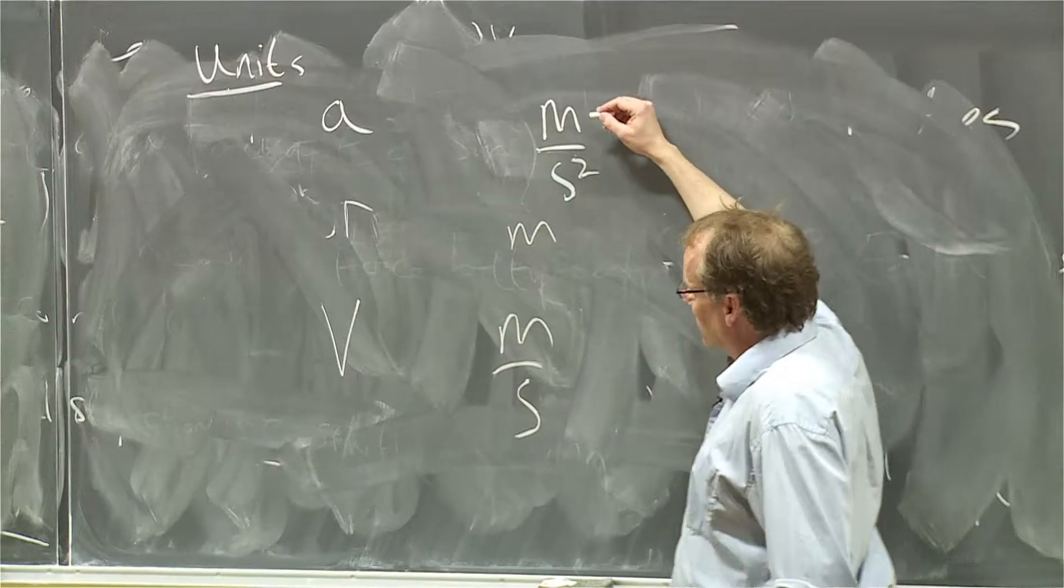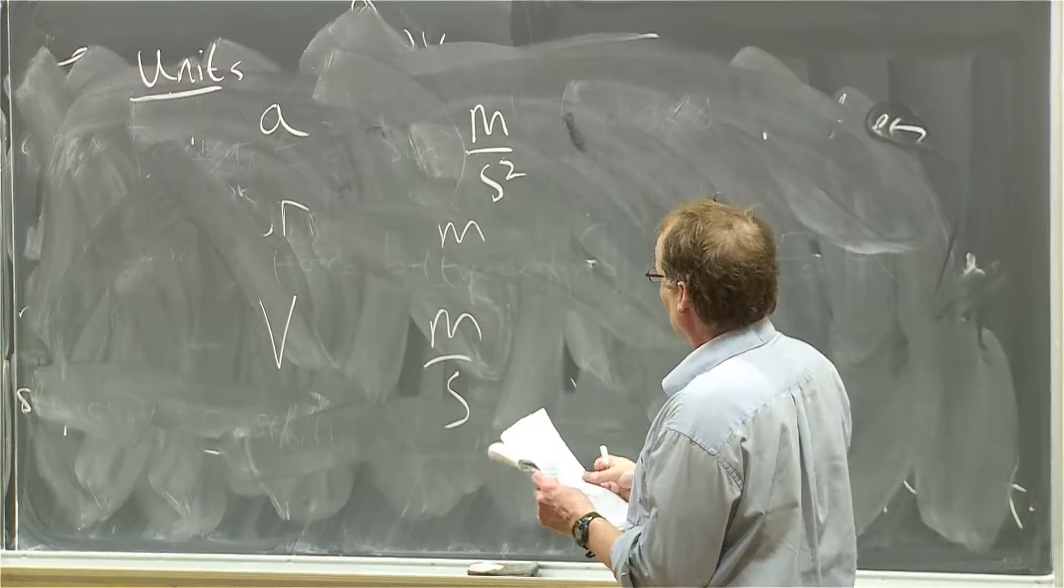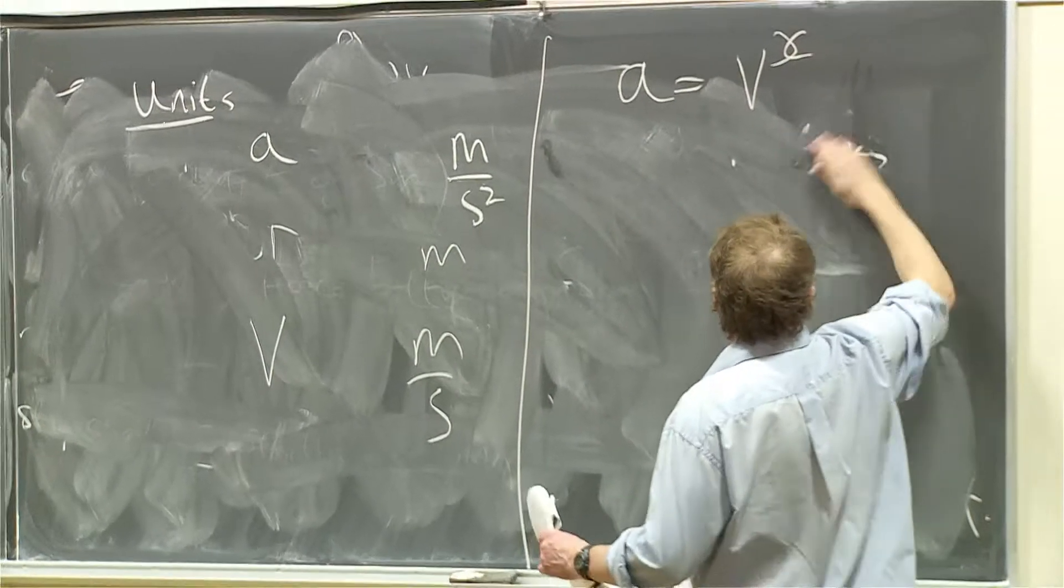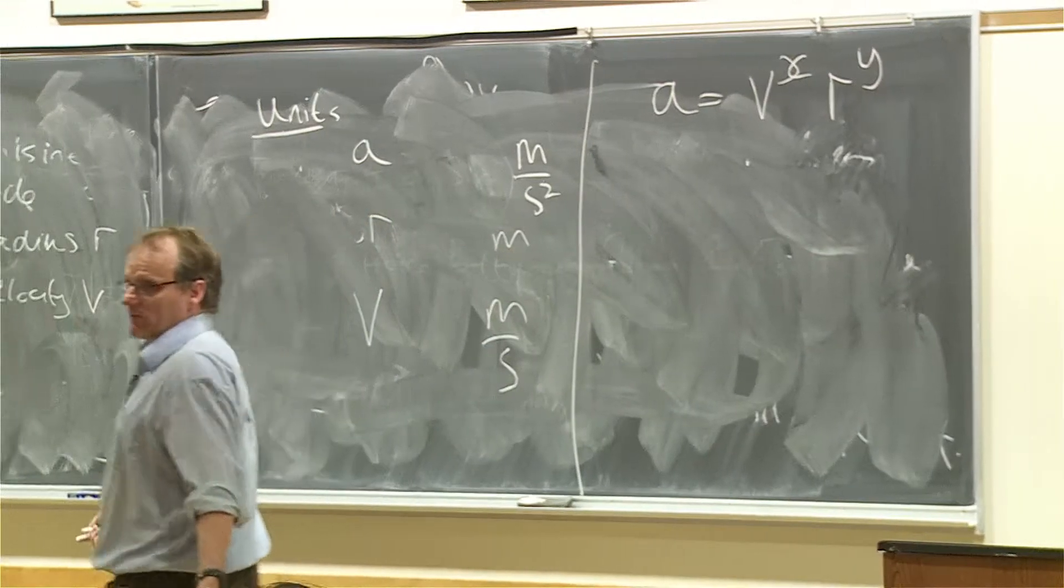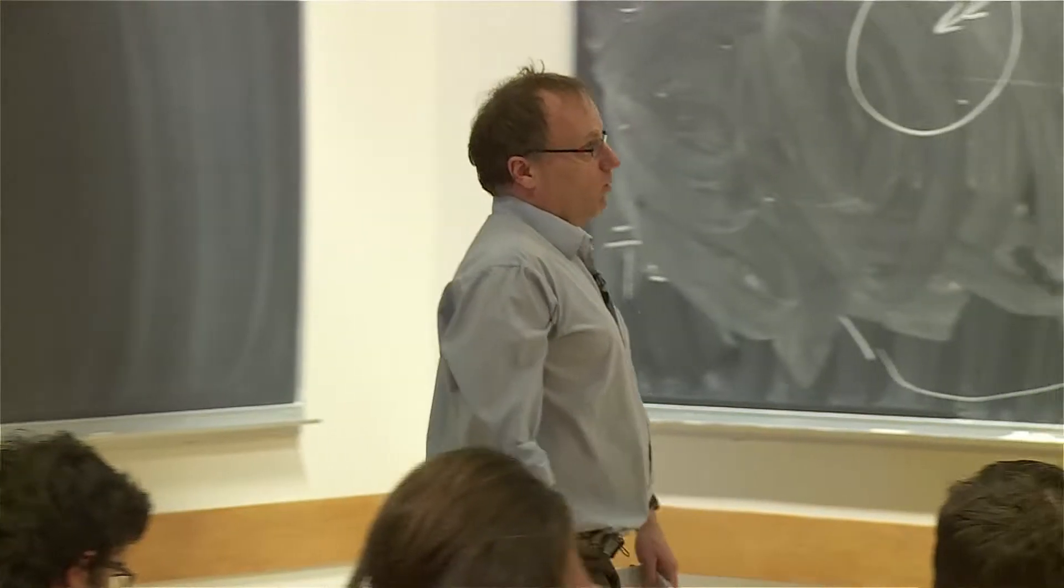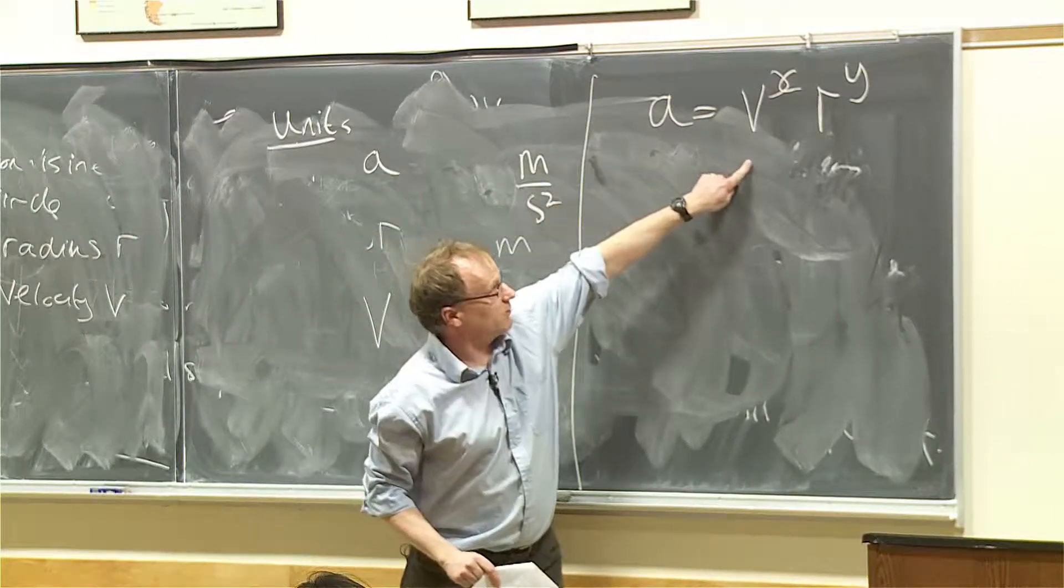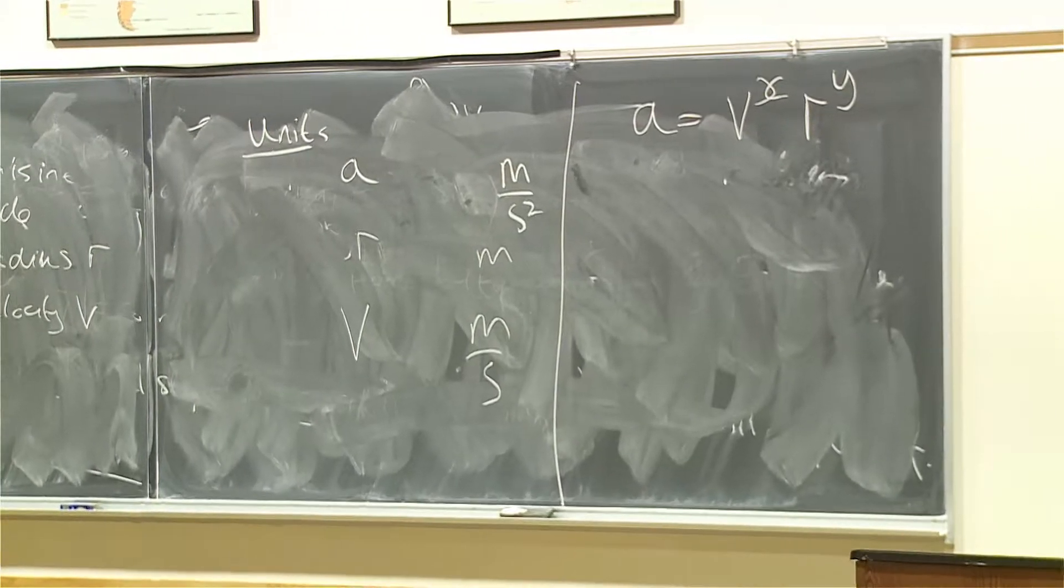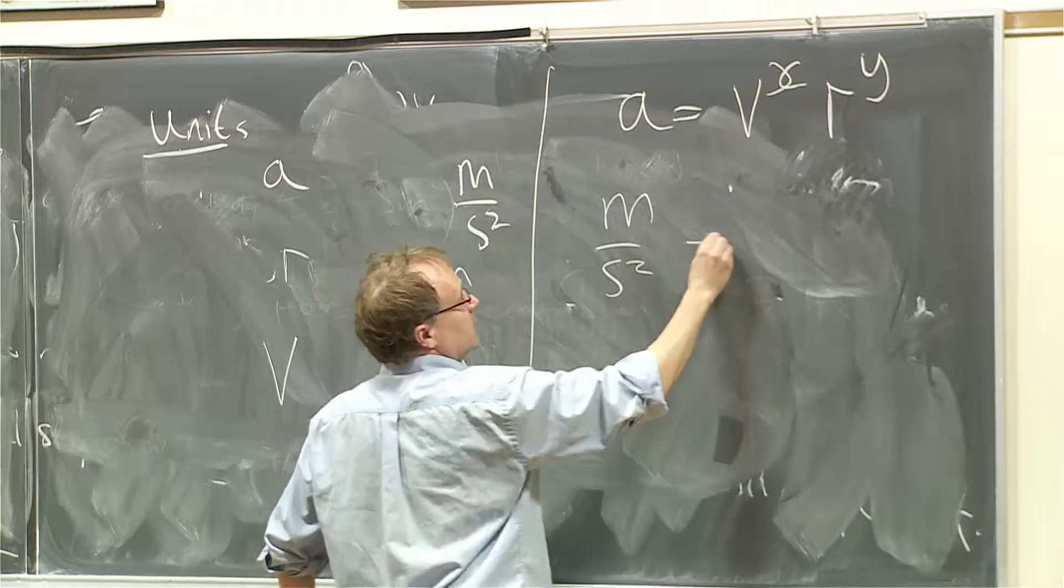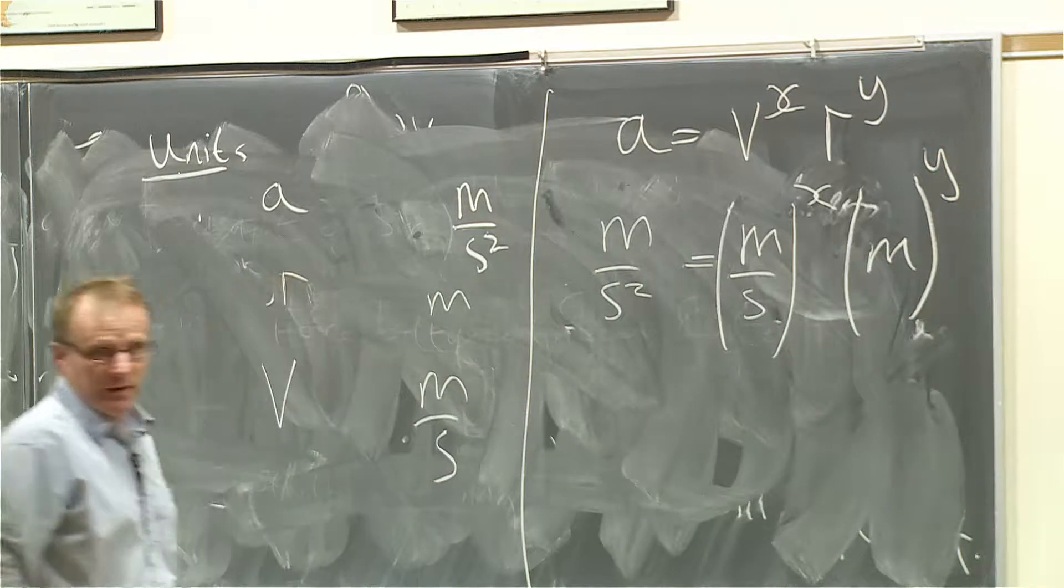So we need to find the relationship between A, R, and V such that the units match. So the way that we do that is we write the following. We write A equals V to the power X times by R to the power Y. And we need to figure out what X and Y are. This is a standard technique in mathematics or physics. We know what the units of this is, we know the units of this, and we know the units of this. So all we do is we put the units of A here, units of V, and units of R, and we solve the equation for X and Y. So what we're solving is for the powers. So we have meters over seconds squared equals meters over seconds to the power X times by meters to the power Y. Everybody with me?